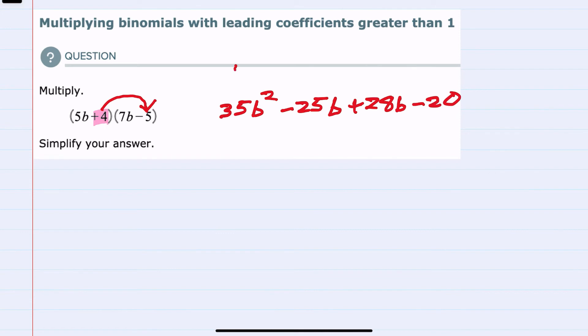So in effect, this was FOIL: multiplying the first terms, then multiplying the outer terms, followed next by the inner terms, and then lastly, the last terms.